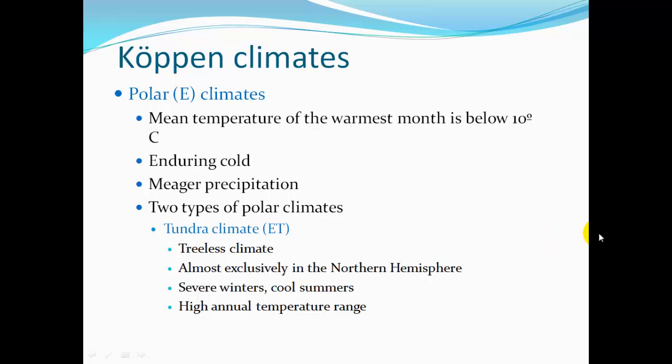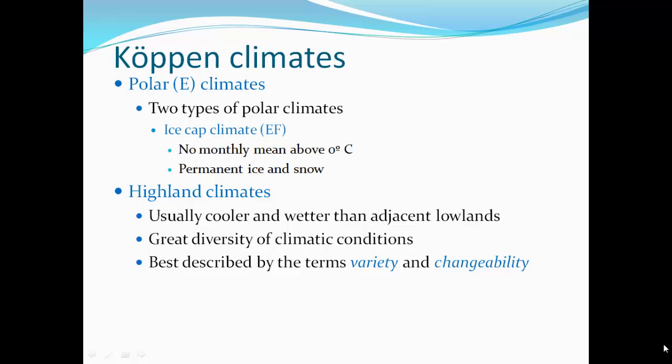Polar E climates: the mean temperature of the warmest month is below 10 degrees Celsius — probably below 32 degrees Fahrenheit for the whole year — with enduring cold and meager precipitation. Two types: tundra climate ET, a treeless climate almost exclusively in the Northern Hemisphere with severe winters, cool summers, and high annual temperature range; and ice cap climate EF, with no monthly temperature above zero degrees Celsius and permanent ice and snow. Highland climates H are usually cooler or wetter than adjacent lowlands, with greater diversity and changeability of climate conditions.